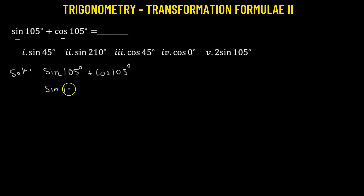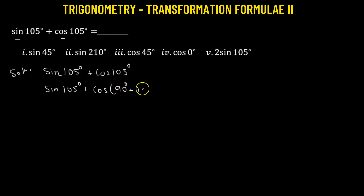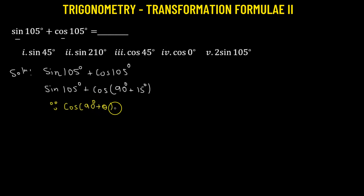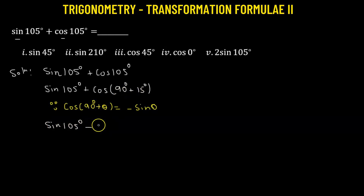To do that, all we have to do is rewrite the angle 105 degrees of cosine. Cosine of 105 degrees can also be expressed as 90 degrees plus 15 degrees — exactly the same thing. There's an added advantage to it, because we know that cosine of 90 degrees plus theta equals negative sine theta. So we'll use this formula. We get sine 105 degrees minus sine 15 degrees, since cosine(90+15°) becomes negative sine 15 degrees.